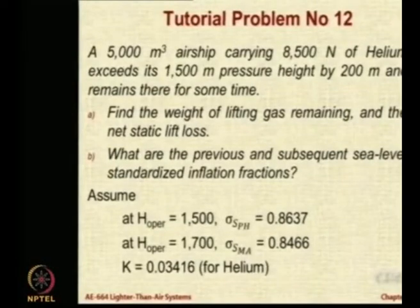Now let us apply all that we have learned today to look at a real life operating problem. There is an airship which has got an envelope volume of 5000 meter cube. At the ground level it carries 8500 newtons of helium. Its pressure height is 1500 meters but it exceeds it by 200 meters and goes to 1700 meters and remains there for some time.